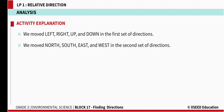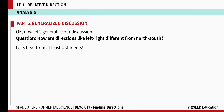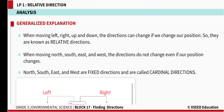As explained in the video, when we move left, right, up, or down, that is the first set of directions. When we move north, south, east, or west, those are the second set of directions. When moving left, right, up, or down, the direction changes if we change our position, so these are known as relative directions.